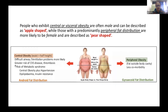Based on fat distribution, the body shape of obese individuals can be categorized as apple-shaped or pear-shaped. Those with central or visceral obesity are often male and described as apple-shaped, while those with predominantly peripheral fat distribution are more likely to be female and described as pear-shaped. Patients with central obesity carry most of their weight above the waist and are more likely to have difficult airway and ventilation problems, greater cardiovascular disease risk, thrombosis, and metabolic syndrome. Patients with peripheral obesity have fewer comorbidities and less perioperative cardiopulmonary risk.